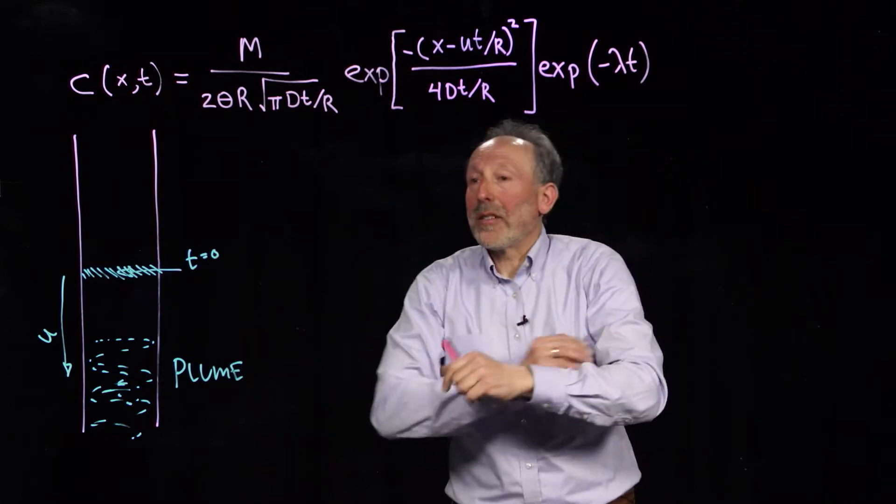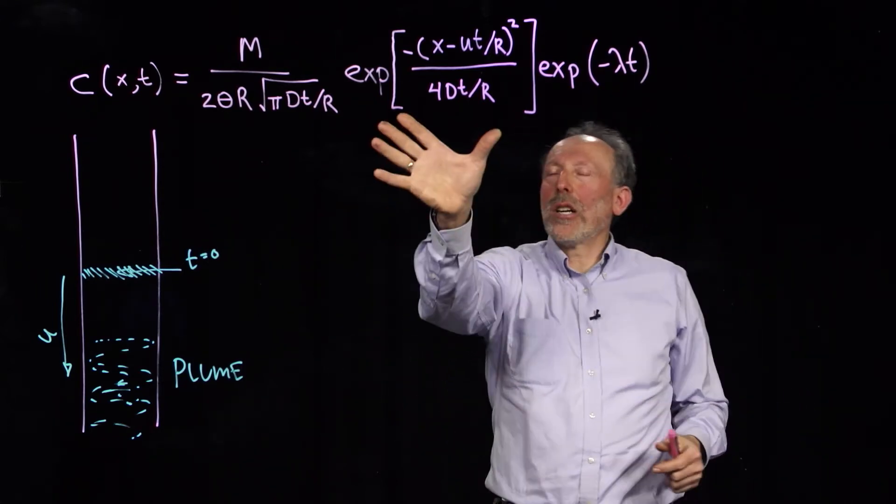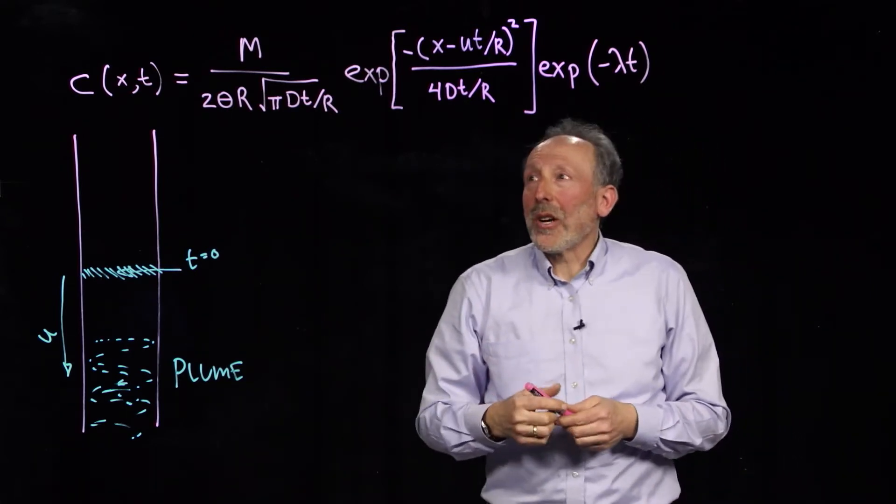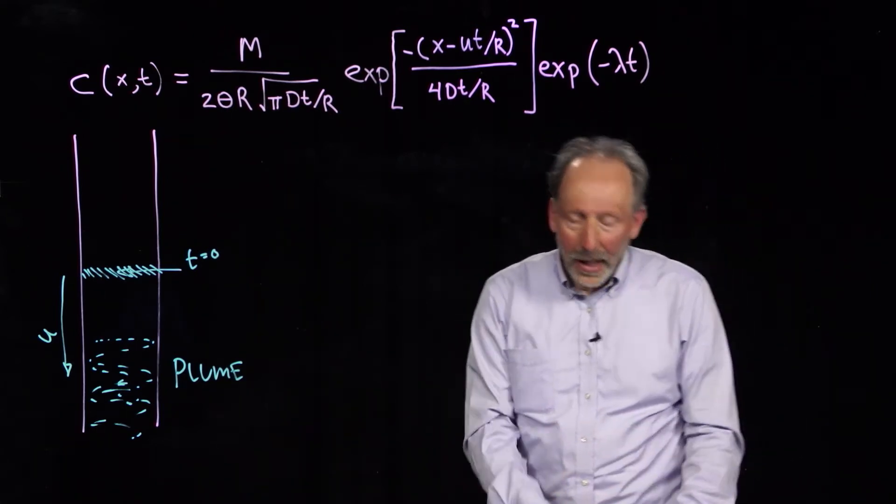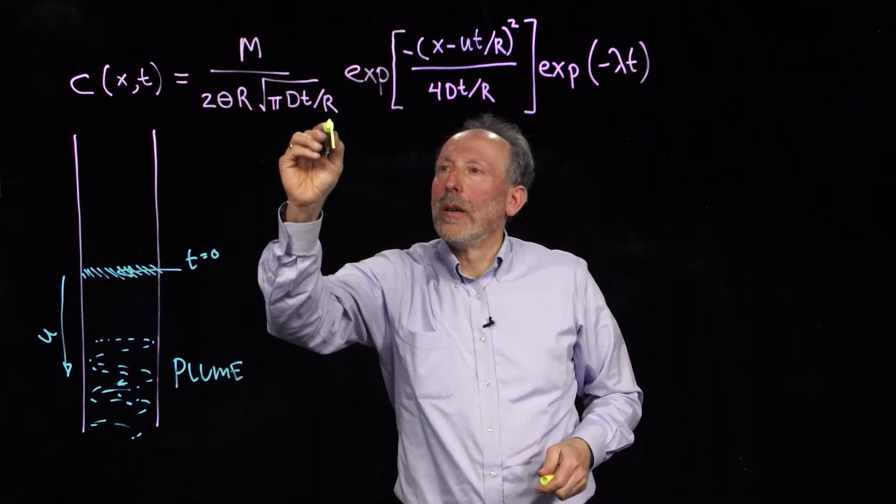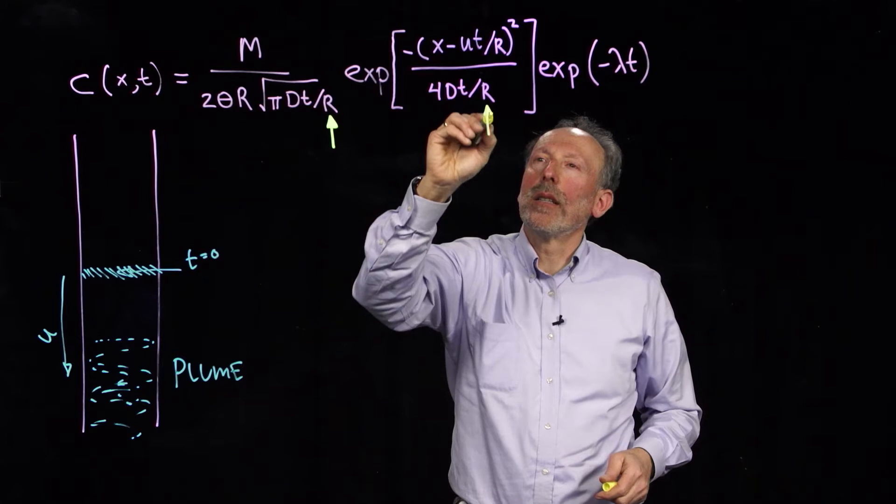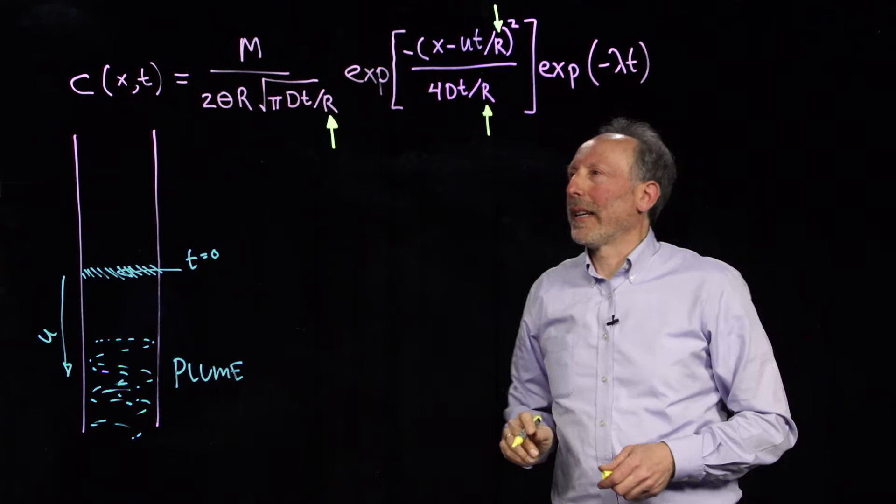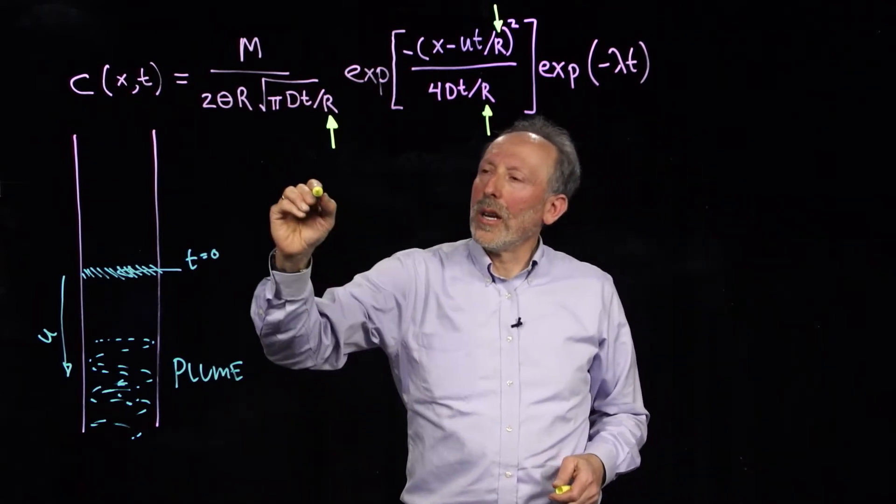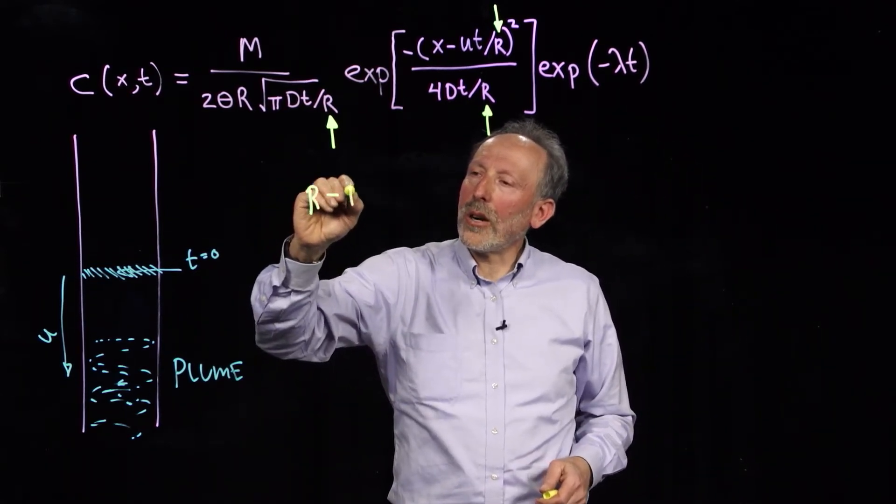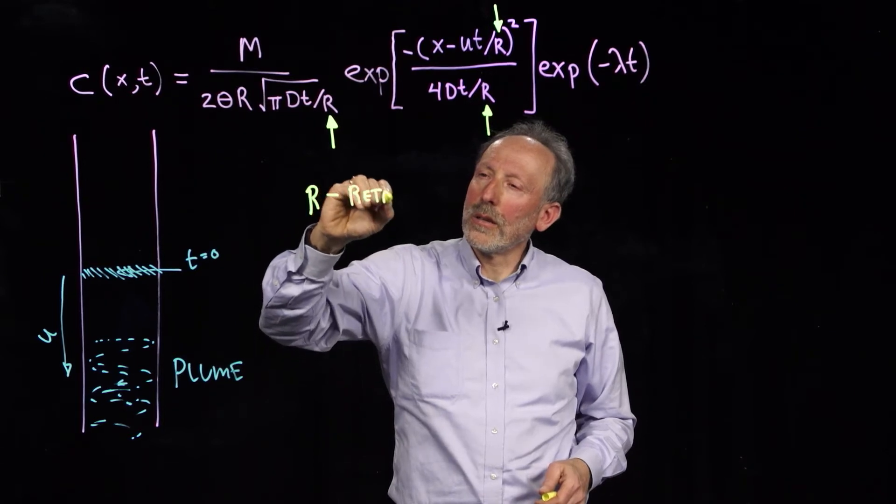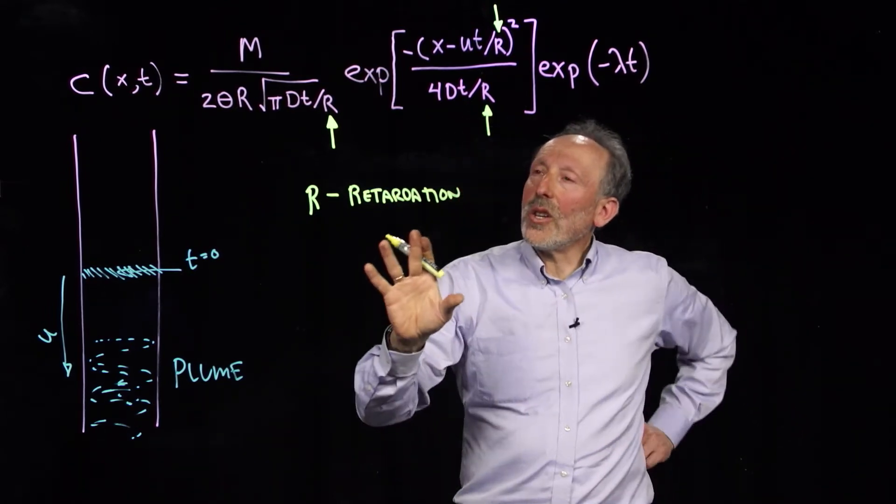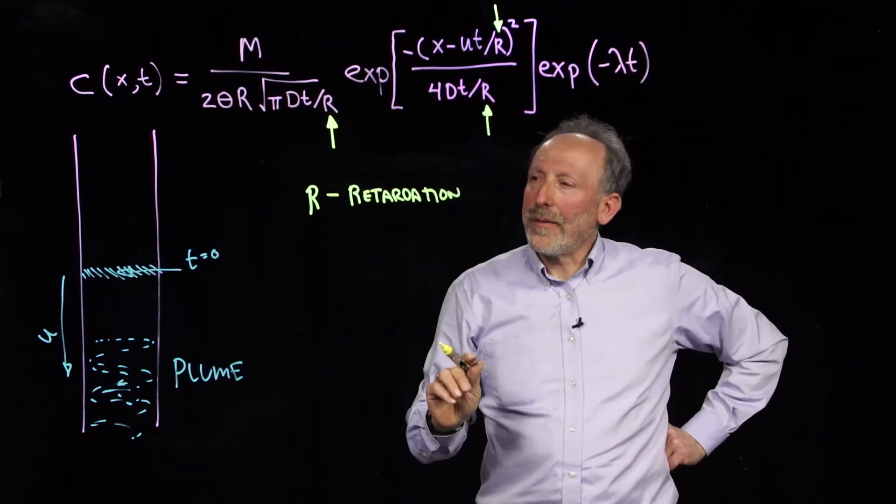So, we have our solution to the advection dispersion equation. And we've talked about the fact that it's a Gaussian form. But one of the things we haven't talked about yet is the impact of sorption. We see this R showing up over and over again. In fact, it shows up in exactly three places. The R is called the retardation of a plume. And this is only going to find this form when we have what's called linear sorption.